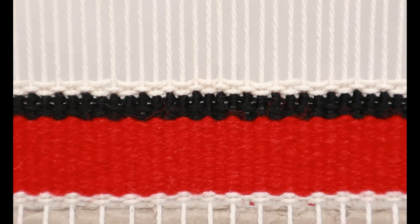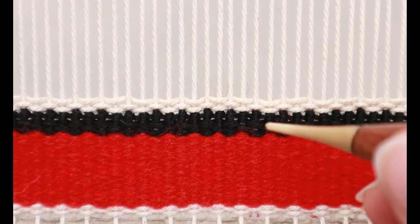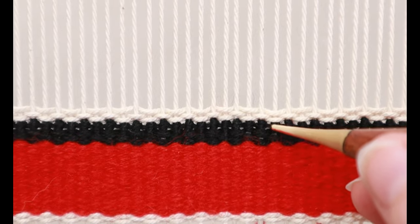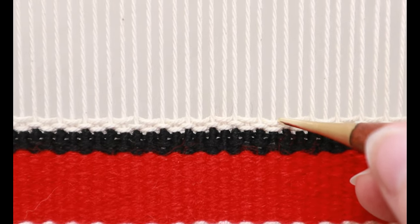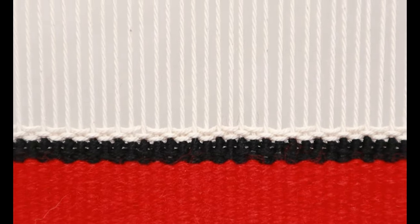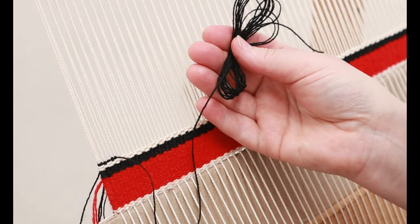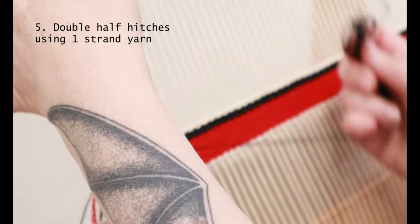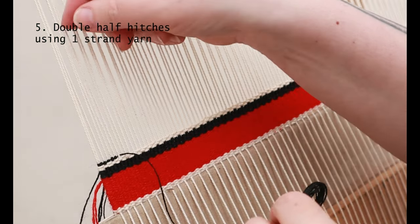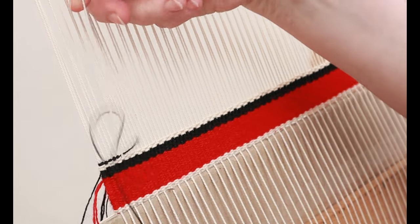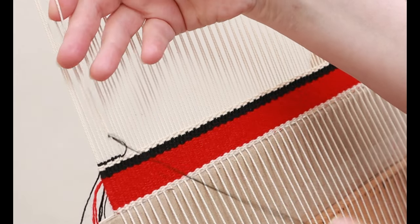This is what it looks like so far. We have the three rows of weaving, we've got the double half hitches, and we have the three rows of warp thread.